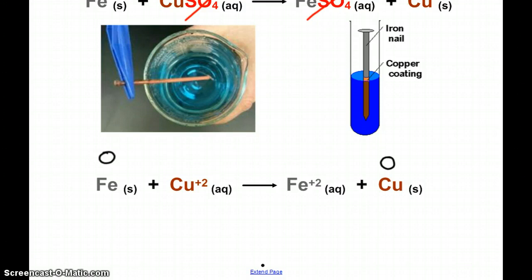And then our next rule says for monatomic ions, the oxidation number is the charge of the ion. So the copper plus two ion has an oxidation number of plus two, as does the iron plus two ion.